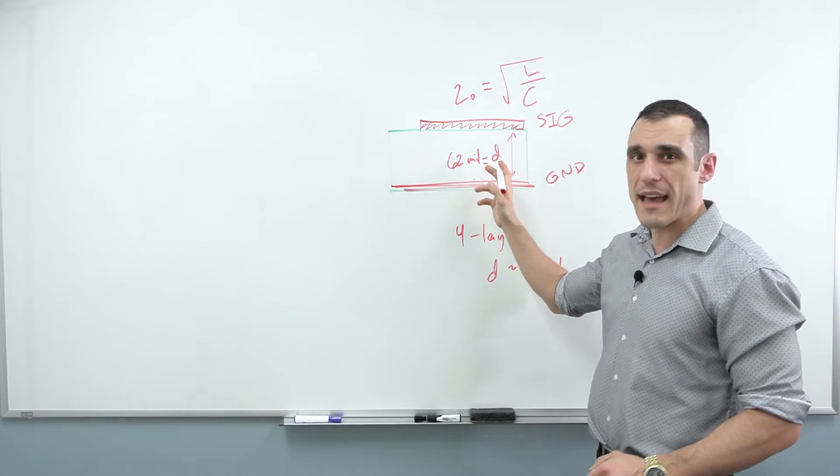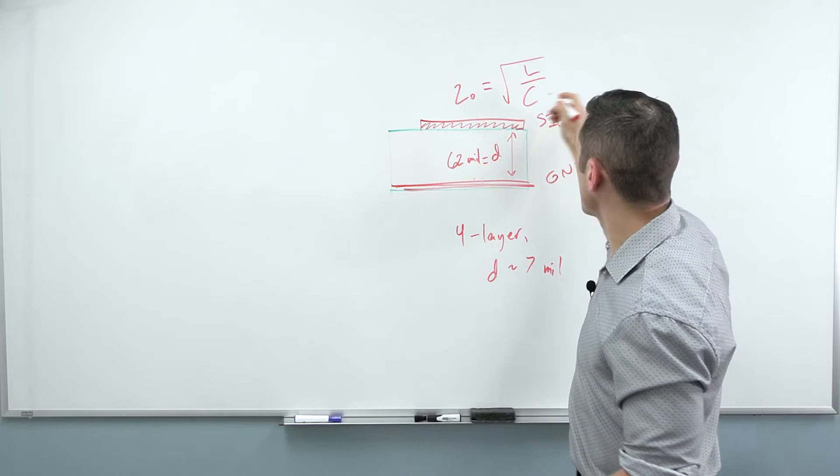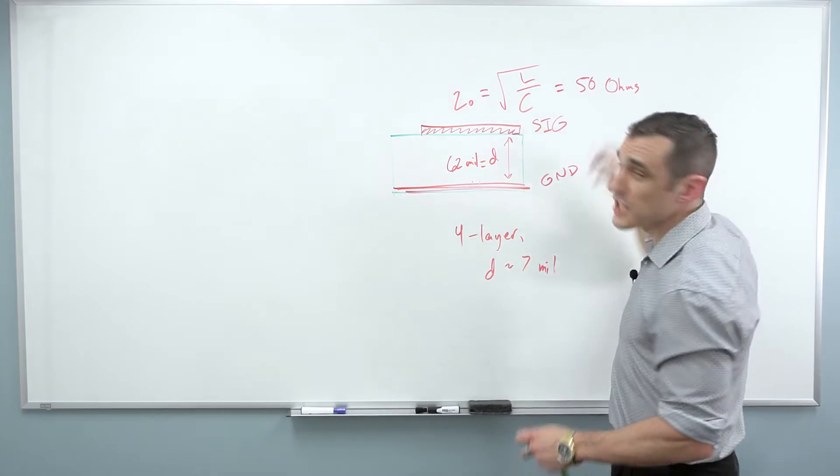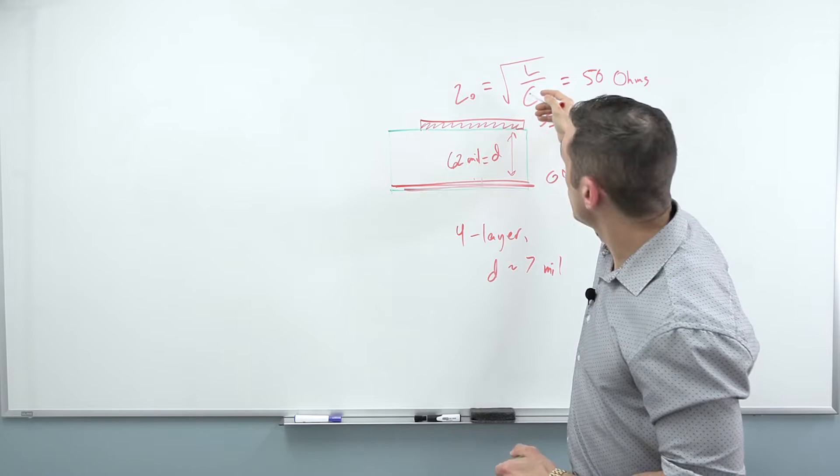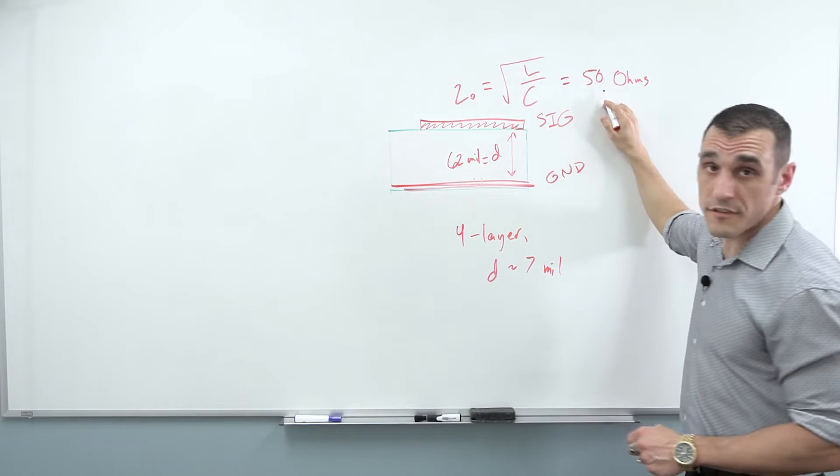So what's the problem here with having D really large and trying to hit this impedance target? Let's say we want to hit like 50 ohms. If C is very small, we then need to make L very small in order to hit a 50 ohm impedance.